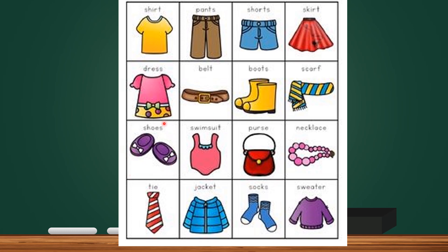Next is shoes. Shoes. S-H-O-E-S. Shoes — there is also an S here for shoes. Next is swimsuit. Swimsuit. S-W-I-M-S-U-I-T. Swimsuit is the clothing that we wear to the swimming pool to swim.